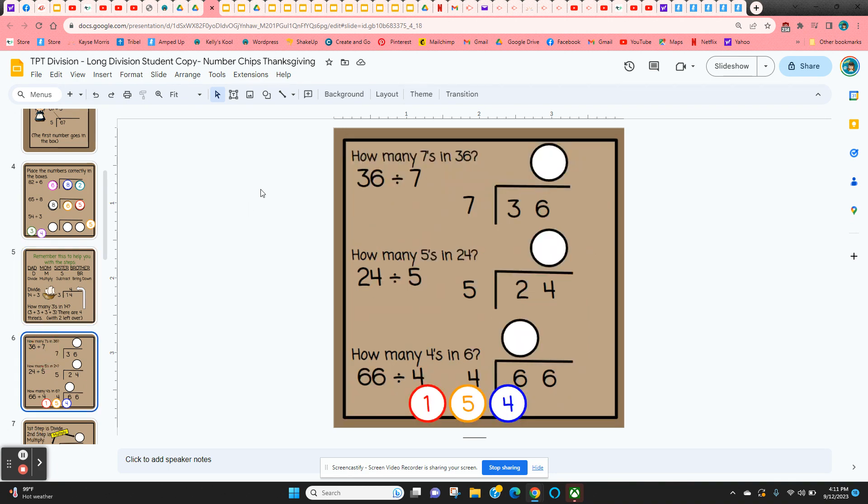So they're just going to practice the first step. So here 36 divided by 7. How many times does 7 go into 36? We're going to grab that 5. You just click and hold on the edge and then you can move this wherever you like. Same thing here. How many 5s in 24? We're going to use the 4 and so on.